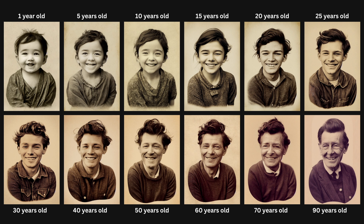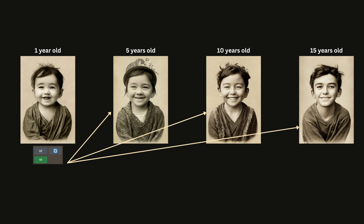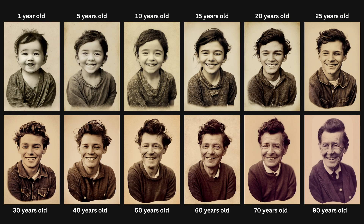These are all the results summarized — notice how similar they are. It really does look like the same person aging over time. I always remixed the latest variation: to get the 10-year-old image I remixed the 5-year-old, to get the 15-year-old I remixed the 10-year-old, and so on. If you try to create all images from the 1-year-old, they won't look that similar, because we make small changes with every variation — jumping 5 to 10 years at a time — so the character changes only slightly and retains most of its features.